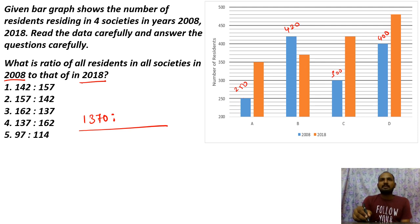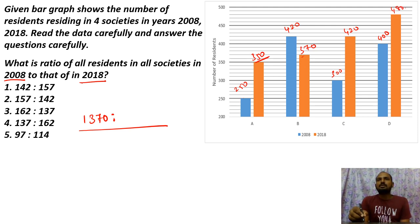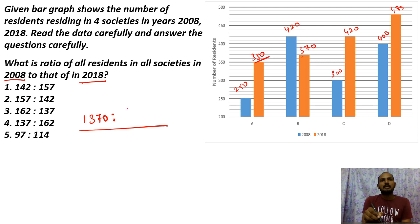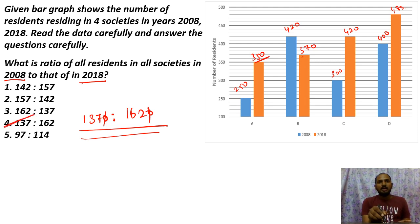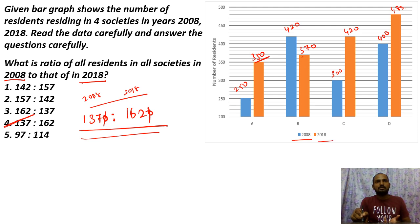For 2018: 350 plus 370 = 720, plus 420 = 1140, plus 460 (or 480) = approximately 1620. So the ratio of 2008 to 2018 is 1370 : 1620, which simplifies to 137 : 162. The question asks for 2008 first, then 2018.